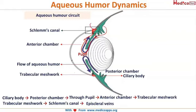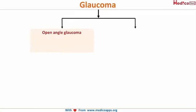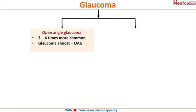Now let's come to the adult glaucomas. Glaucoma is classified into open angle and angle closure. Open angle glaucoma is three to four times more common than angle closure. Basically, the word glaucoma is almost synonymous with open angle glaucoma unless it is mentioned that it is angle closure glaucoma.